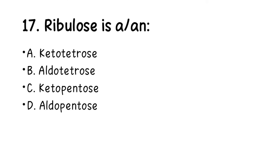Number 17. Ribulose is: A. Keto tetrose, B. Aldo tetrose, C. Ketopentose, D. Aldo pentose. The right answer is C, ketopentose. Pentose means it has 5 carbons, and keto means it has the keto functional group.